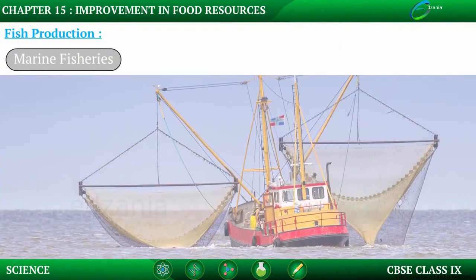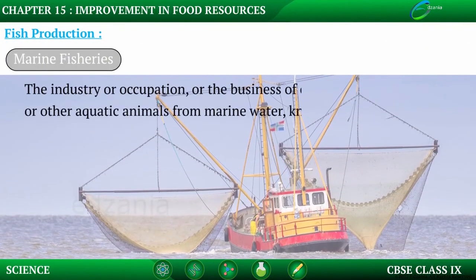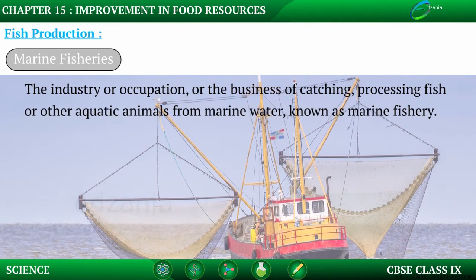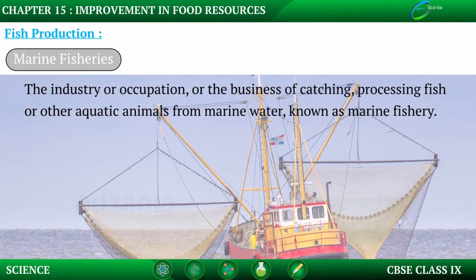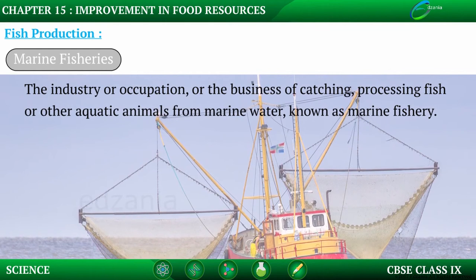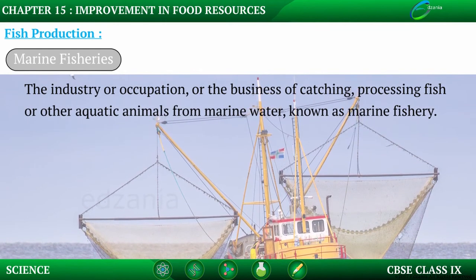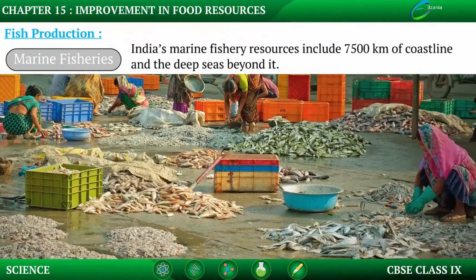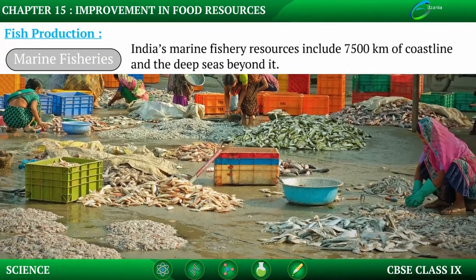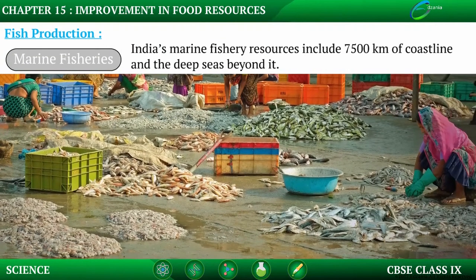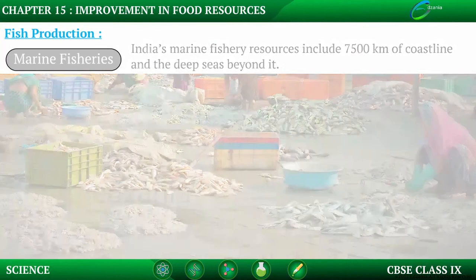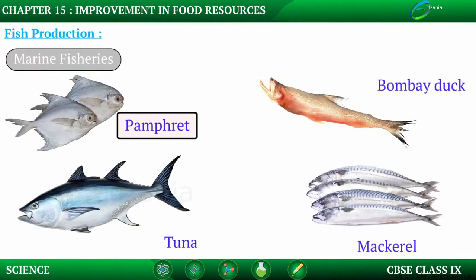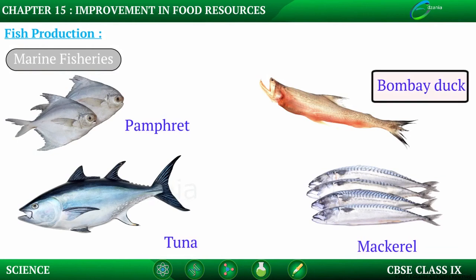Marine fishery is the industry, occupation, or business of catching and processing fish or other aquatic animals from marine water. India's marine fishery resources include 7,500 km of coastline and deep seas beyond it. The popular marine fish varieties are pomfret, mackerel, tuna, and Bombay duck.